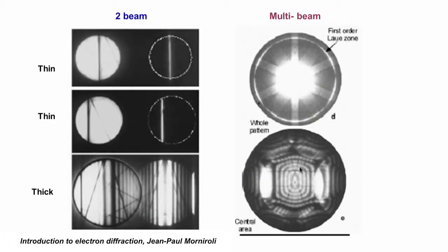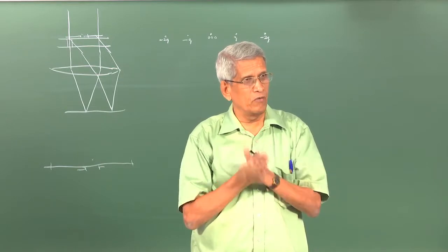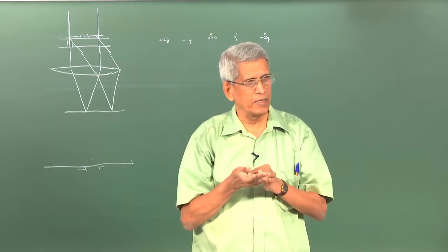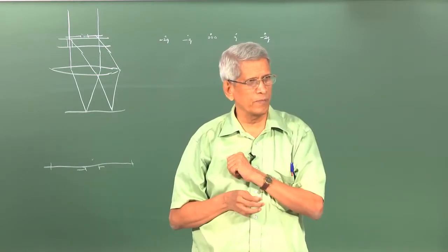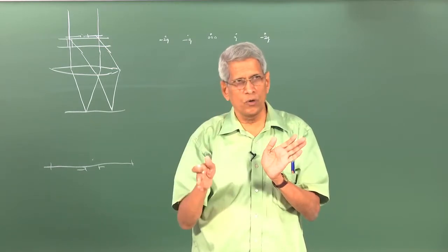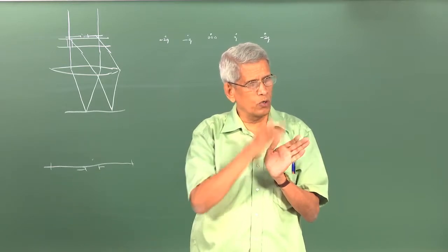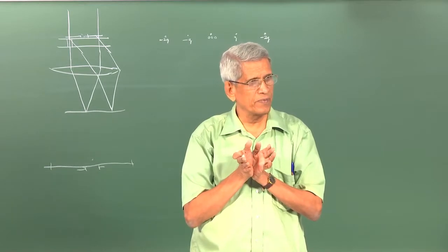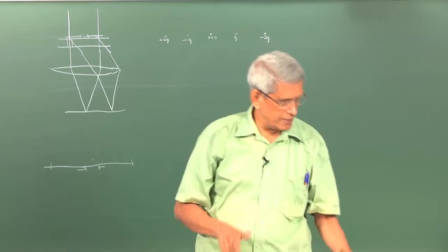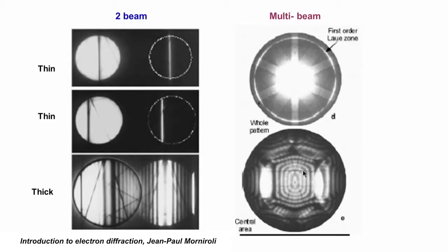The net effect of the zone axis condition is a variation in contrast within the central spot in multiple directions. A single line appears only in the two-beam condition. In a simple cubic structure, with the beam along [001], planes like (100), (010), (110), and (1̄10) can all give rise to diffraction, producing fringes that display the symmetry of that zone axis.